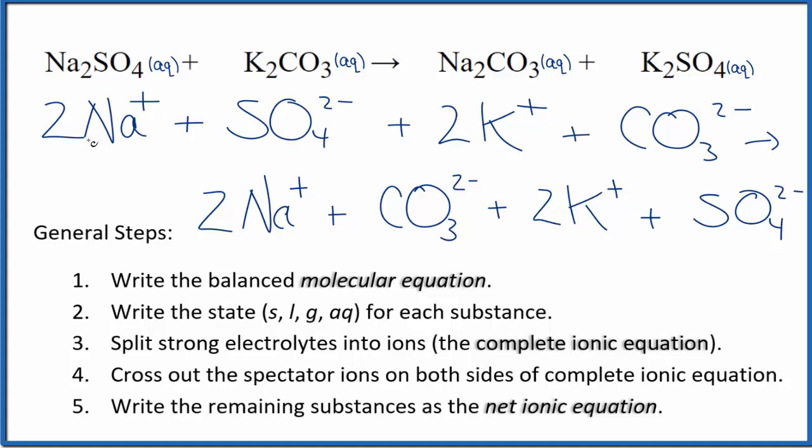And if we crossed out spectator ions, in the reactants, two sodium ions, two sodium ions are the products. Sulfate, sulfate, two potassium ions, again in the products, and then carbonate ion and a carbonate ion, everything's crossed out.